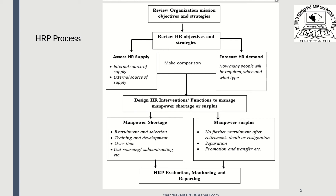Then we can look into the supply side — the HR supply side. There are two sources of supply: one is internal source and another is external source of supply. In case of internal source of supply, we have to refer to the human resource information system and its skill inventory — the skill and competency inventory readily available with the organization. The HR manager maintains a database which helps in various HR decision making, and this internal database or skill inventory is used to check the availability of manpower in the organization.